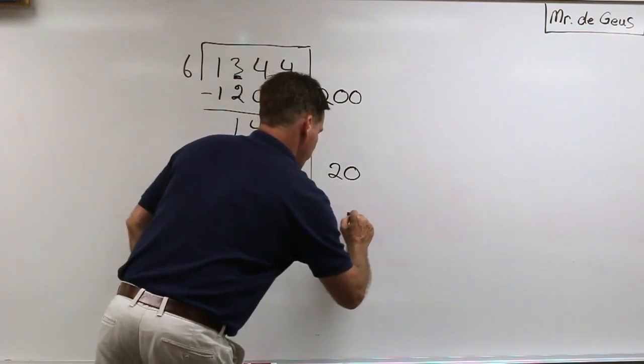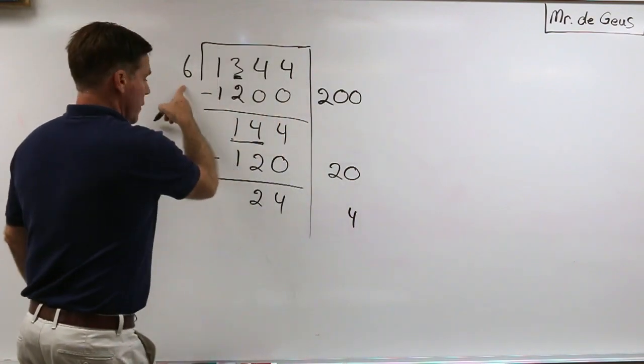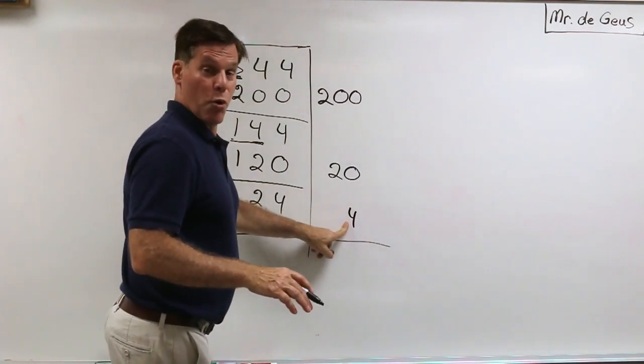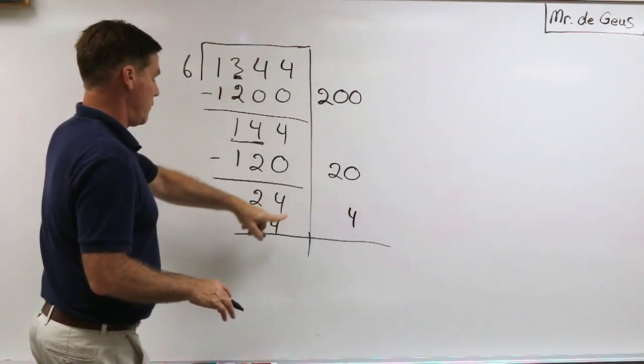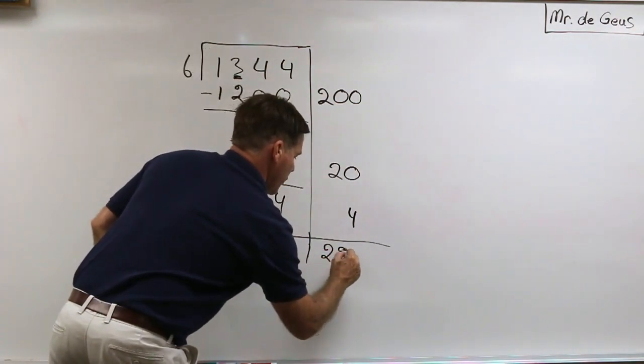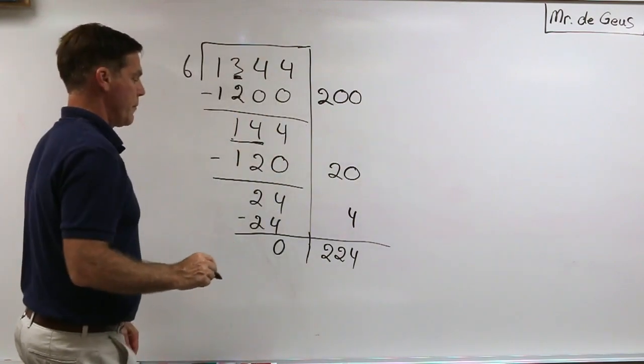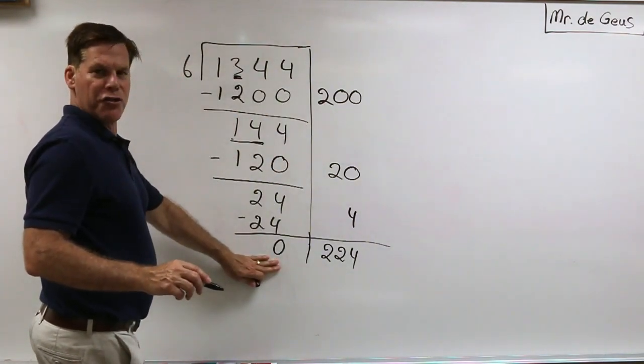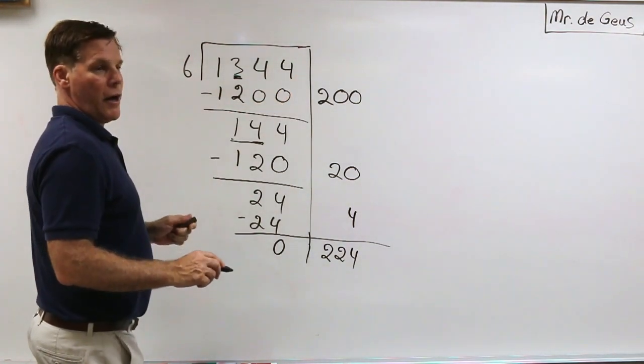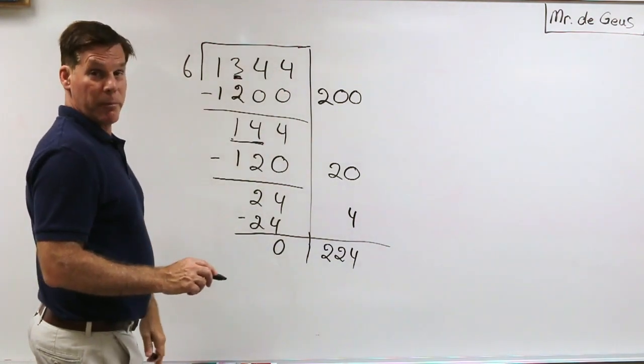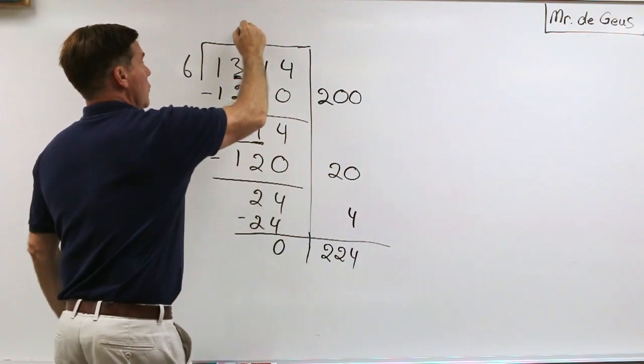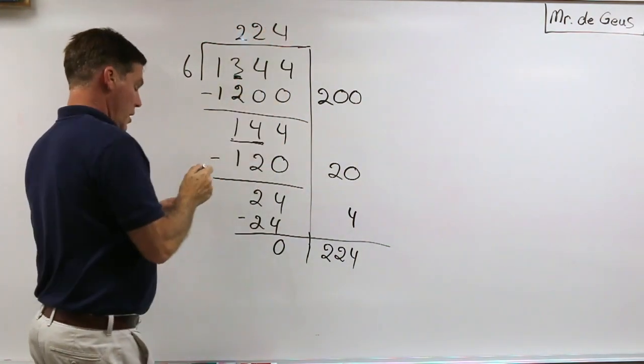And now all I need to do is see how many times does 6 go into 24. I know 6 goes into 24 four times in the ones place, 6 times 24. So 6 times 4 is 24, zero. And then just add this side up, 224. And if there's a number here that's smaller than 6, that would be my remainder. But in this case, I knew that there would not be a remainder. So there's my answer: 6 goes into 1344, 224 times.